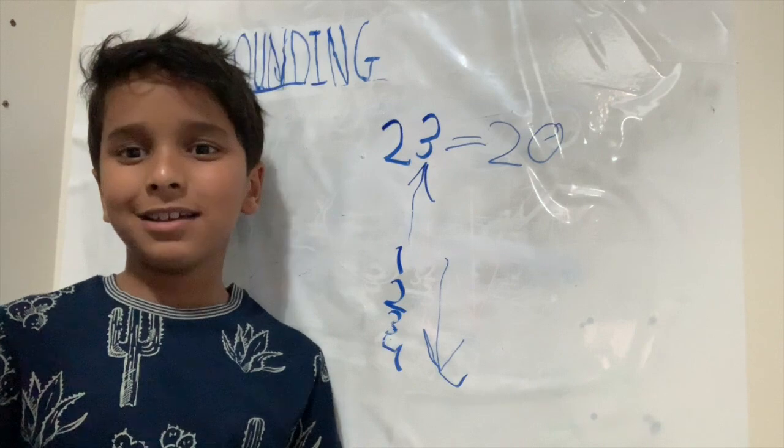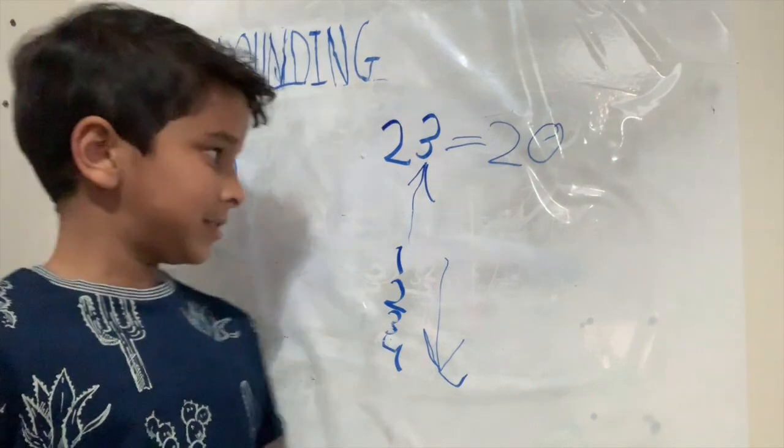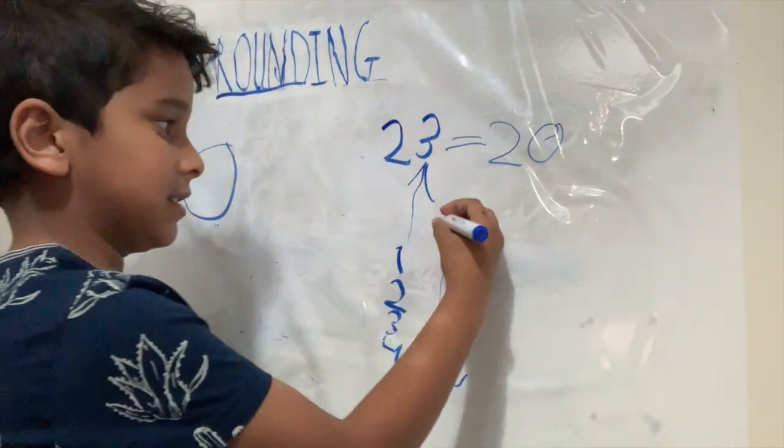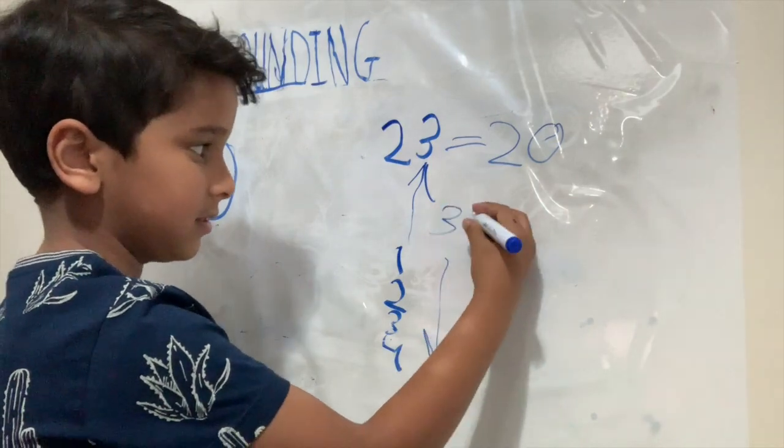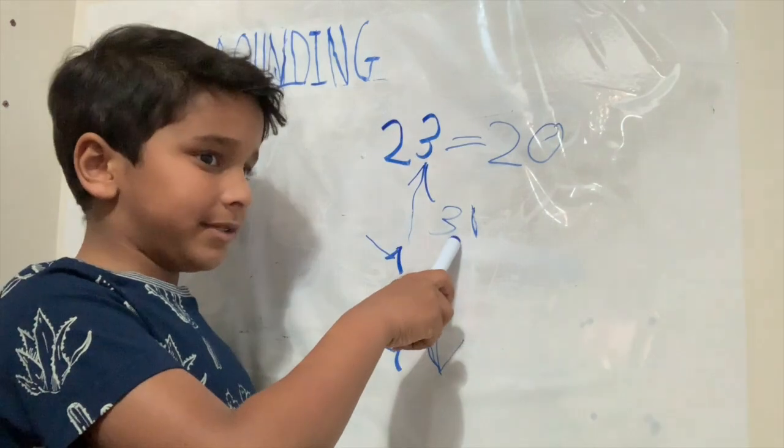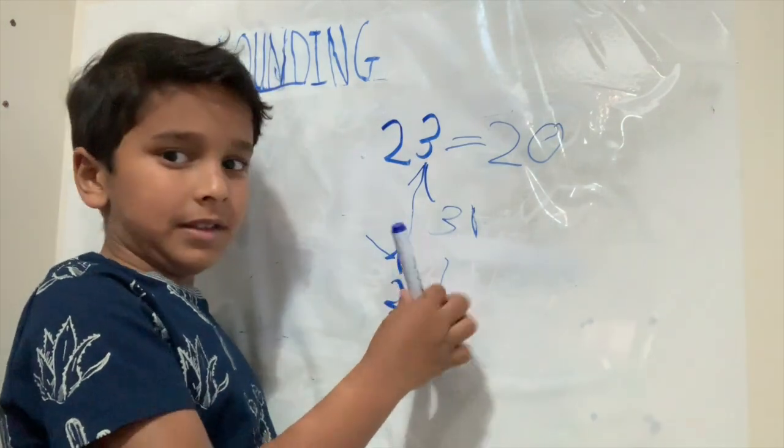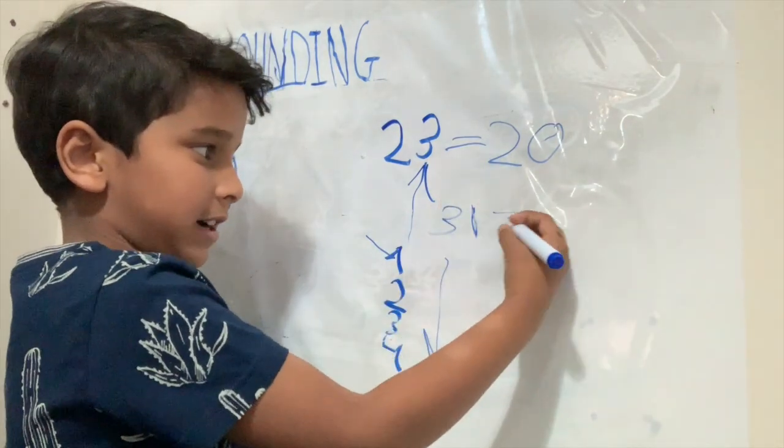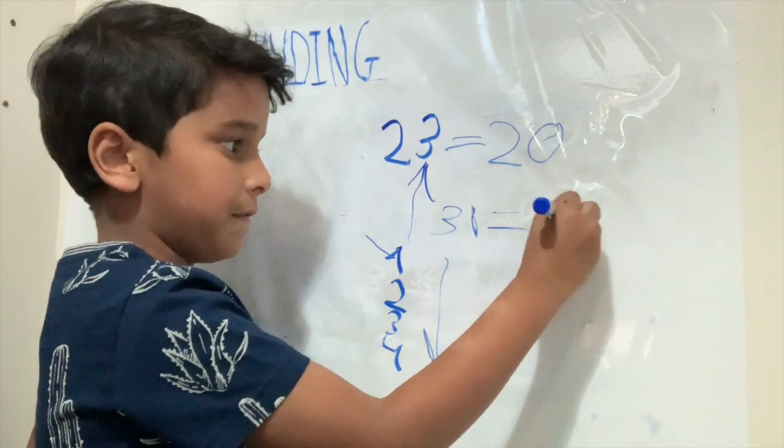Let's take a look at a few more examples. 31. 31 ends with 1. That means it rounds down to 30.